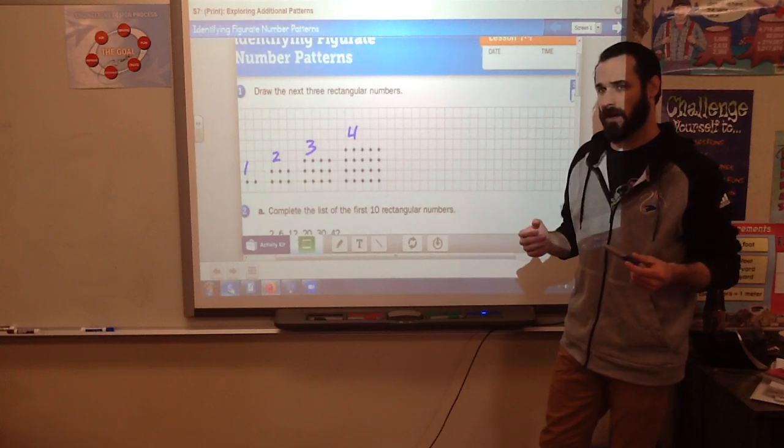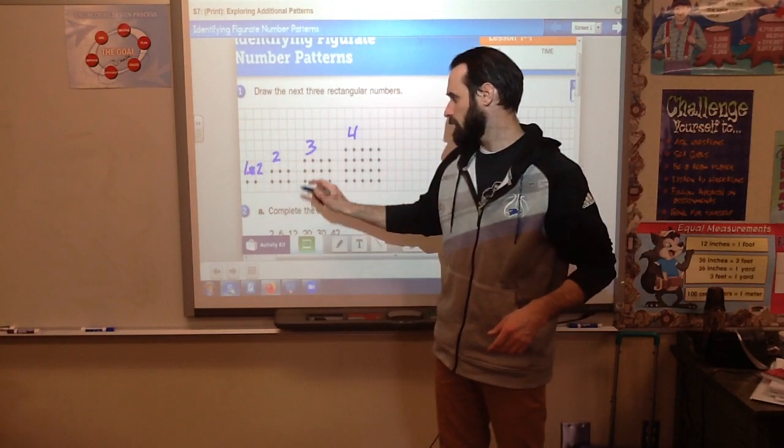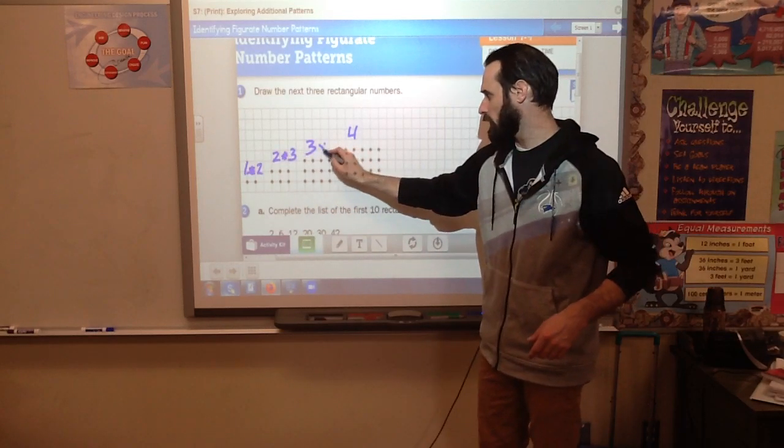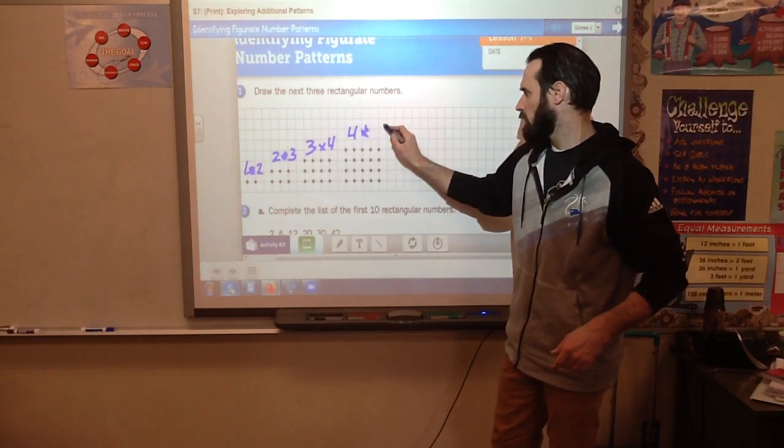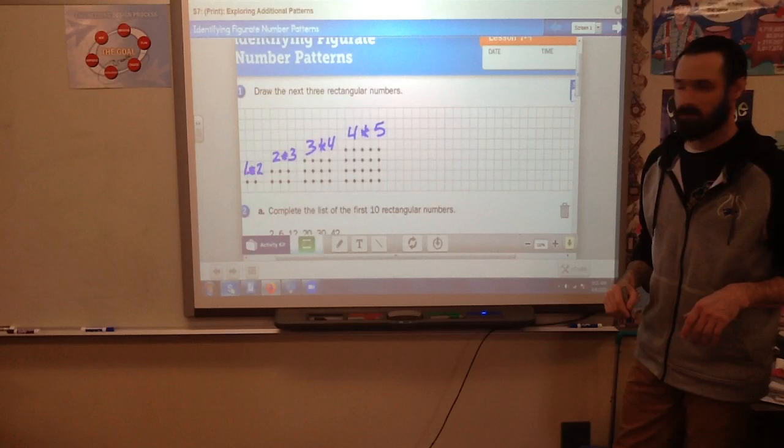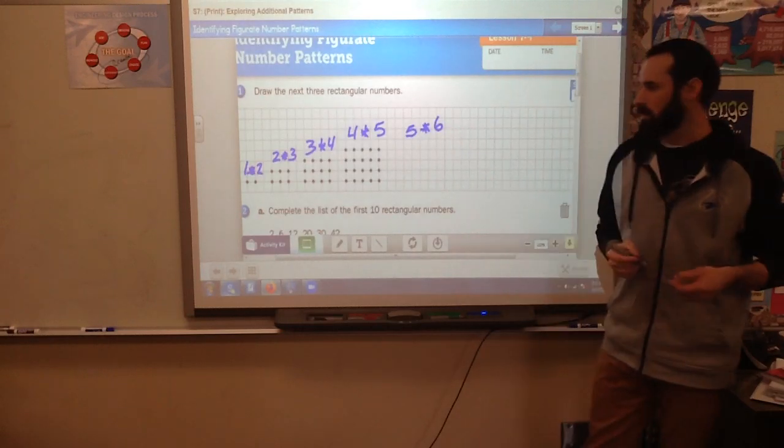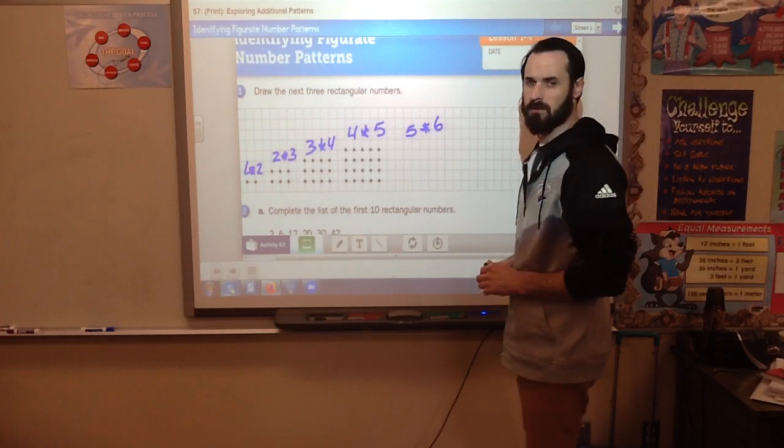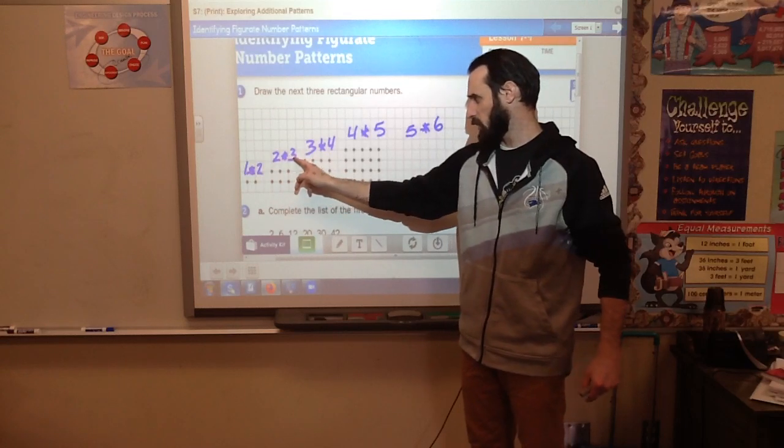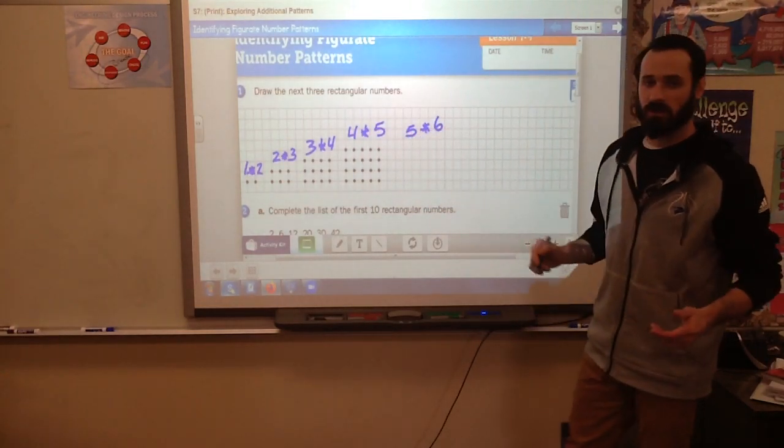But what's actually happening here is that we have an array, and arrays have dimensions. The dimensions of this first array is 1 times 2, and this one is 2 times 3, this is 3 by 4, and this is 4 by 5. So think for a second, what do you think the next array is going to be? It would be 5 by 6, because we're taking the two counting numbers, keeping the second one and multiplying it by the next one.